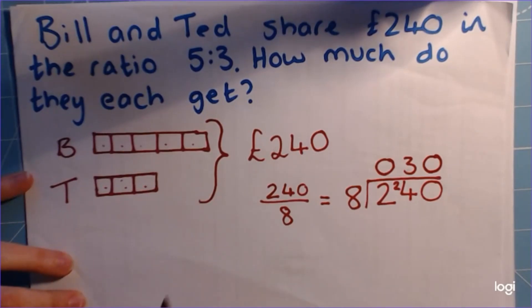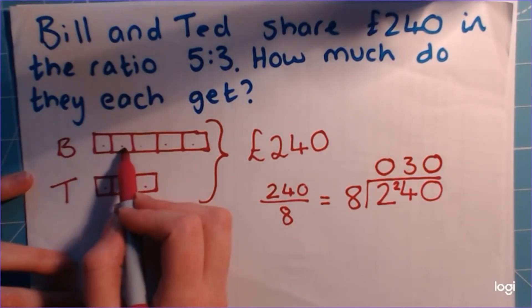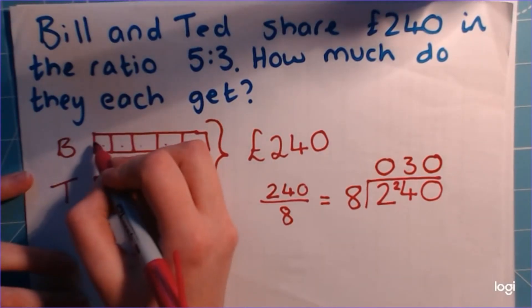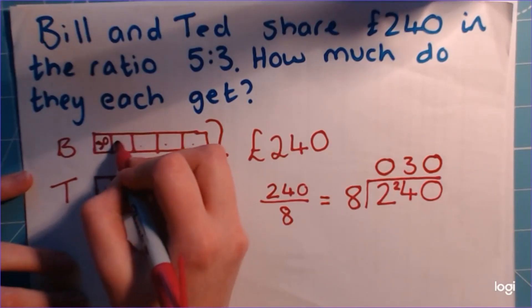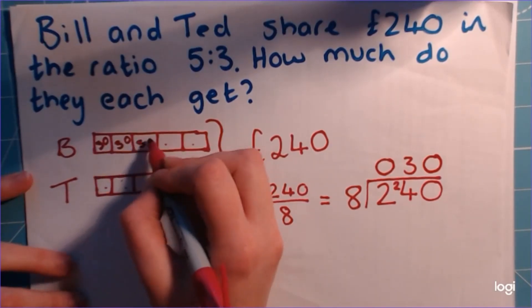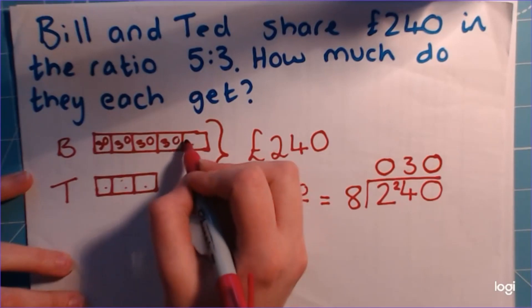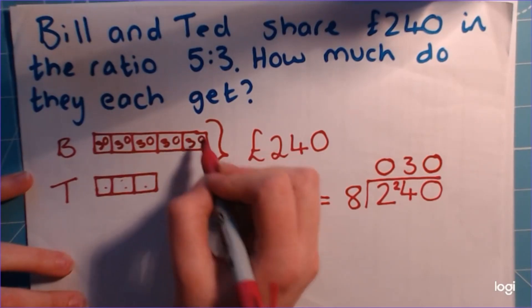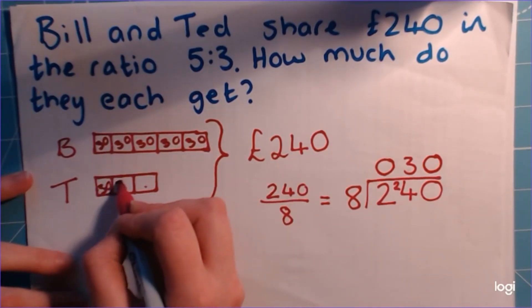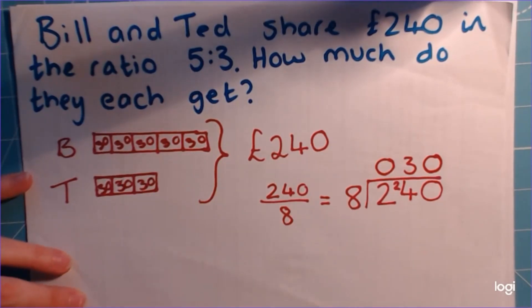So each of these little boxes is worth £30, so I'm going to write them all in — 30 in each of the 8 boxes.